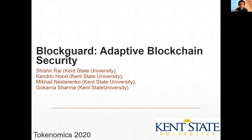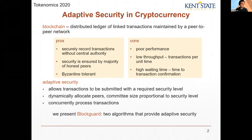My name's Kendrick Kud, and I'm here to talk about BlockGuard, which is an adaptive blockchain algorithm. We work with blockchain, which is a distributed ledger, and it has several attractive points. Chief among them is that it can securely record transactions without a central authority, and this security is ensured by the majority of peers in the peer-to-peer network being honest and not having any kind of faults or crashing.